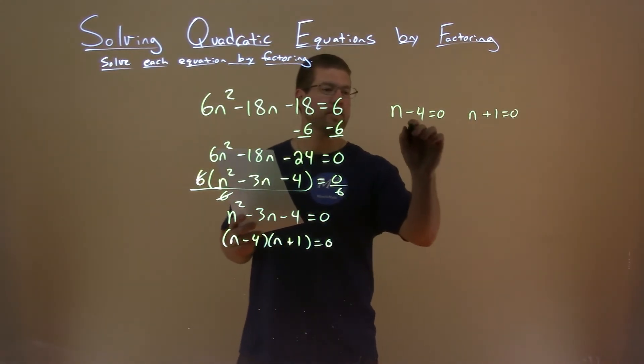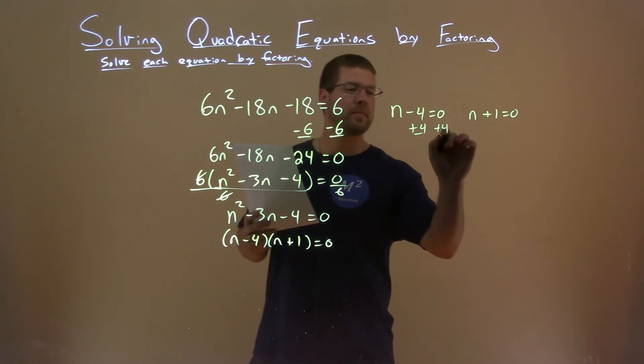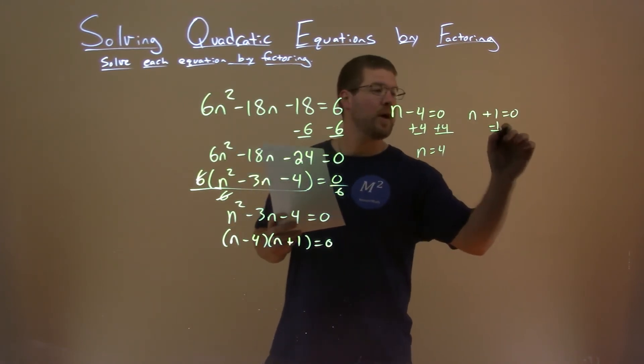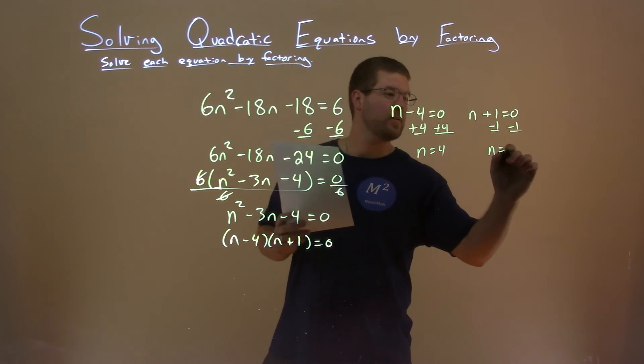And we solve for our variable. We add a 4 to both sides here and n equals a positive 4. Subtract a 1 on both sides and n equals a negative 1.